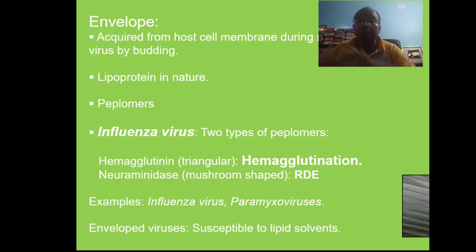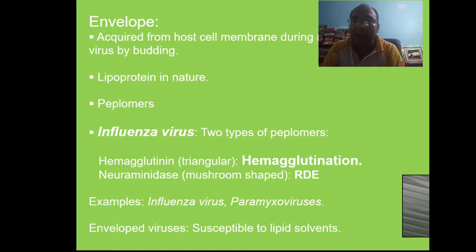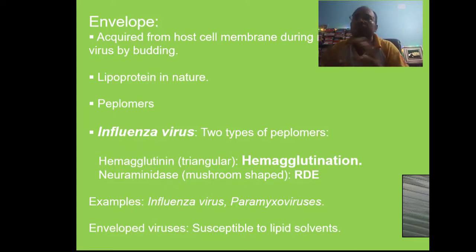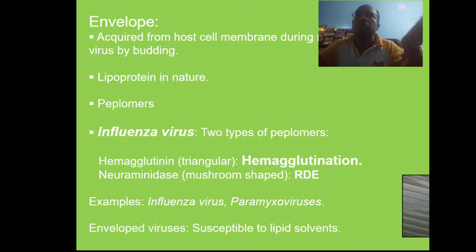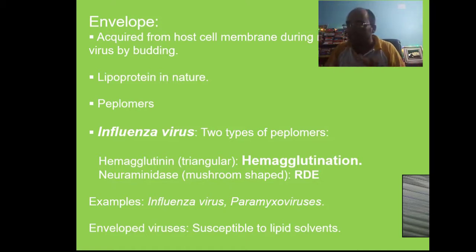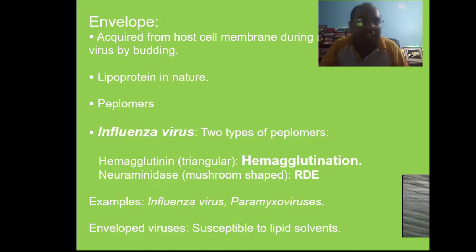Some viruses have an envelope — a lipoprotein layer outside the protein coat — while some viruses do not. Enveloped viruses are mostly those that exit the cell after maturation by budding. From the envelope, spikes such as hemagglutinin and neuraminidase project outward, helping the virus attach to living cells. For example, influenza virus has two types of peplomers: hemagglutinin and neuraminidase. Other enveloped virus examples include paramyxoviruses.